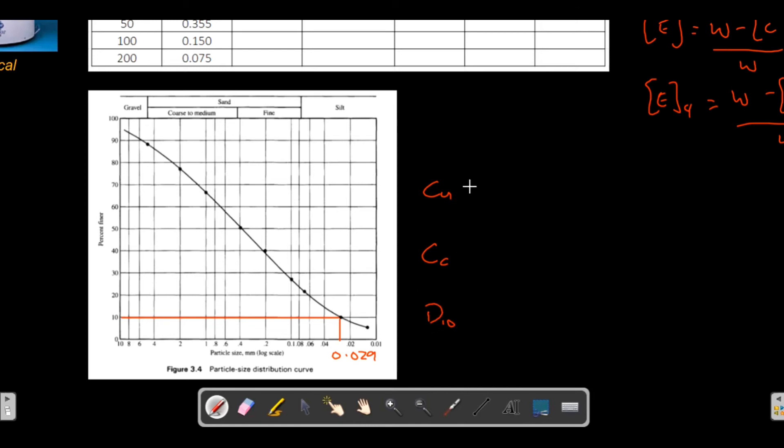The equation for CU or uniformity coefficient is D60 over D10. You just have to find D60 by drawing a line at 60 percent finer and then connect to the diameter. I think it's around 0.78, so that's D60, meaning that 60 percent of your soil sample is finer than 0.78 millimeters.